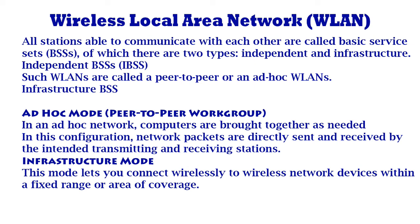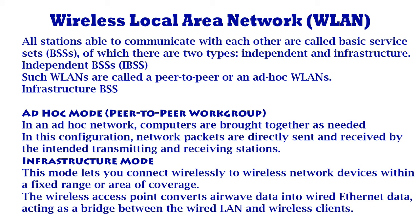With a wireless access point, the wireless LAN can operate in Infrastructure Mode. This mode lets you connect wirelessly to wireless network devices within a fixed range or area of coverage. The access point has one or more antennas that allow you to interact with wireless nodes. In Infrastructure Mode, the wireless access point converts airwave data into wired Ethernet data, acting as a bridge between the wired LAN and wireless clients. Connecting multiple access points via a wired Ethernet backbone can further extend the wireless network coverage.